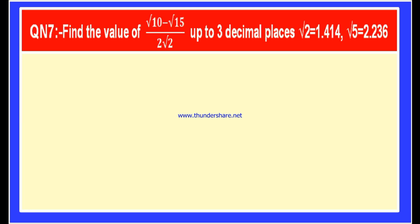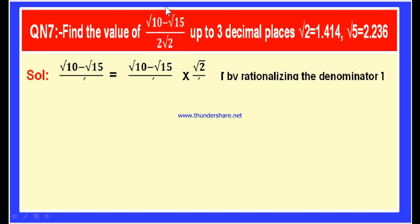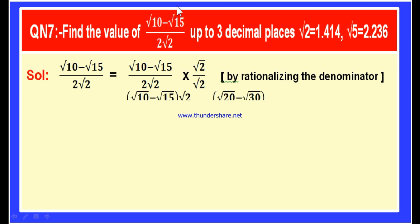Here is the solution. We have to find the value of root 10 minus root 15 divided by 2 root 2. If you observe this, you can find an irrational number at the denominator. Therefore, first of all, let us rationalize the denominator.